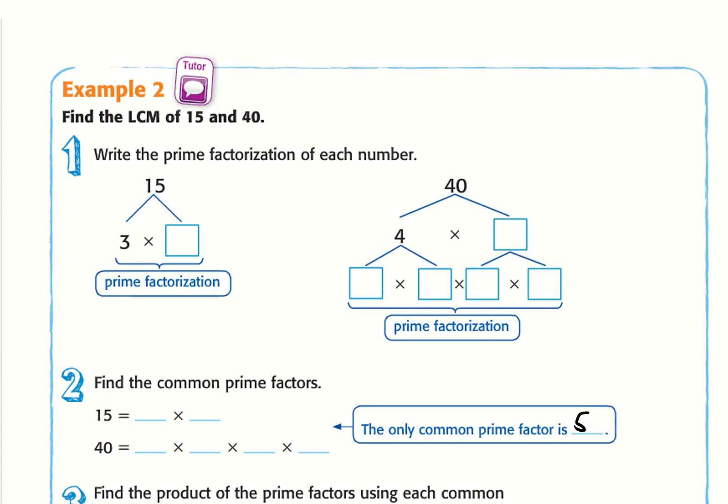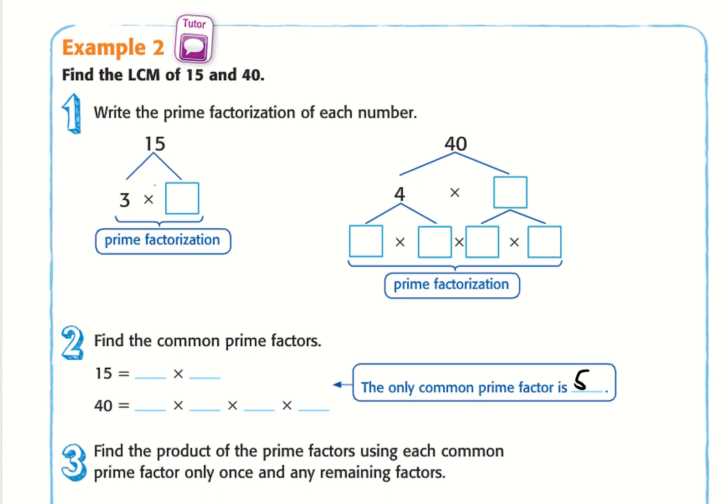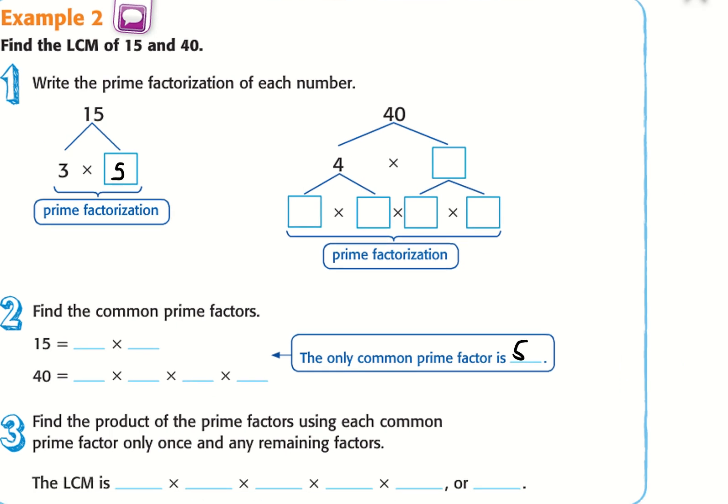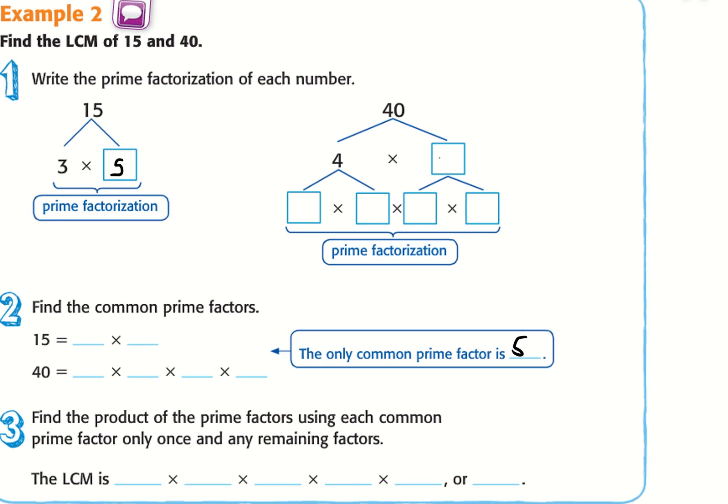So first, we're going to take the prime factorization. So 15 is three times five. Three times five are both prime numbers. Next, we have four times ten. And then four is going to be split up with two times two. And ten is going to be split up with two times five.